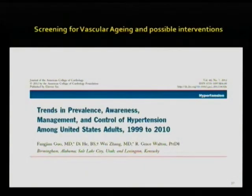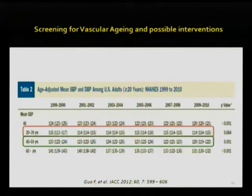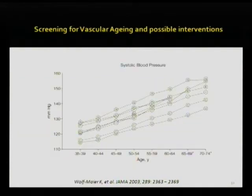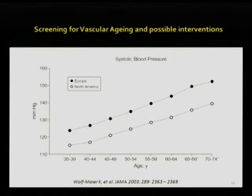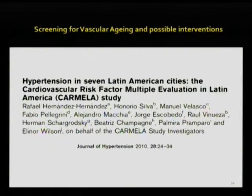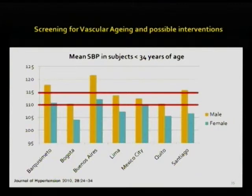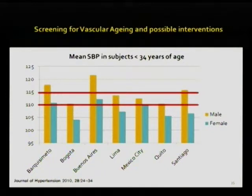Is it so in other parts of the world? Not in the United States, where trends over the last 10 years show that younger subjects have lower blood pressure levels. Especially when you compare North American countries with six European countries, you can see that in younger age classes, North Americans fare quite lower than Europeans. The same is seen in a seven-city study in South America, where only in a few cities can you see exposure to higher levels of blood pressure from an early age.